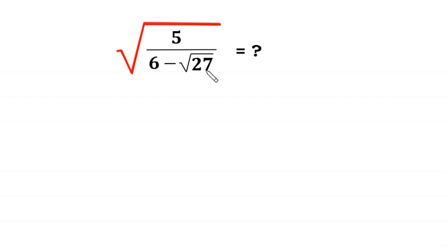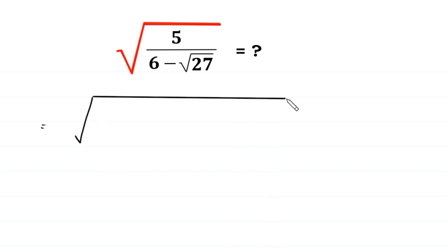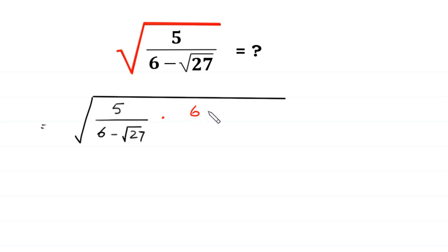First of all, we multiply and divide this expression by the conjugate of the denominator 6 minus square root of 27. We write this expression: square root of 5 divided by 6 minus square root of 27, multiplied by the conjugate 6 plus square root of 27, and divided by 6 plus square root of 27.